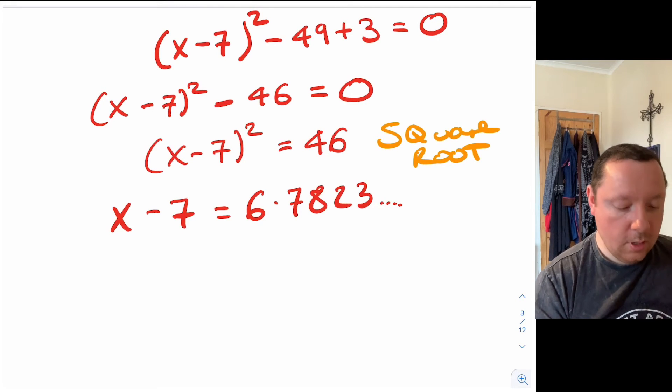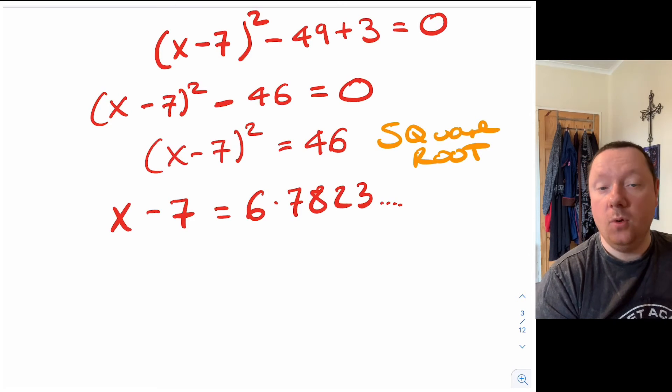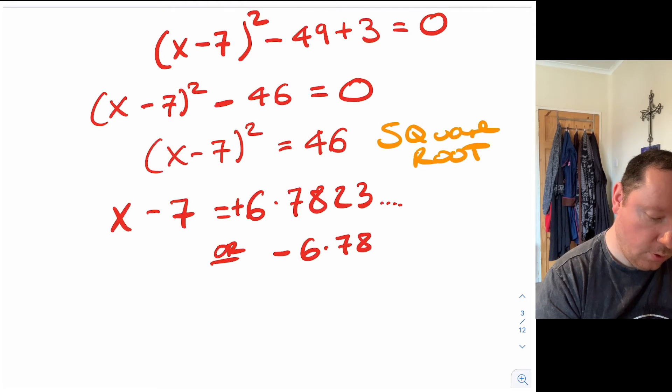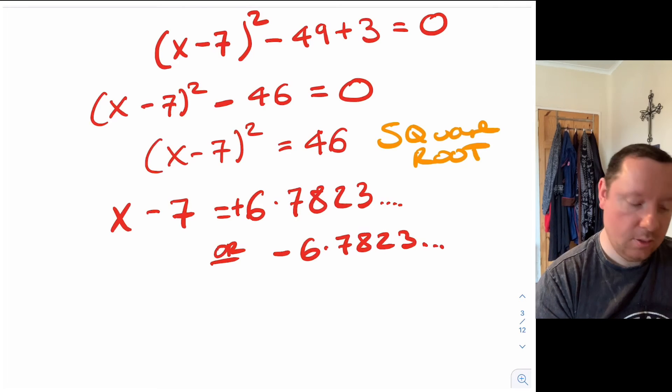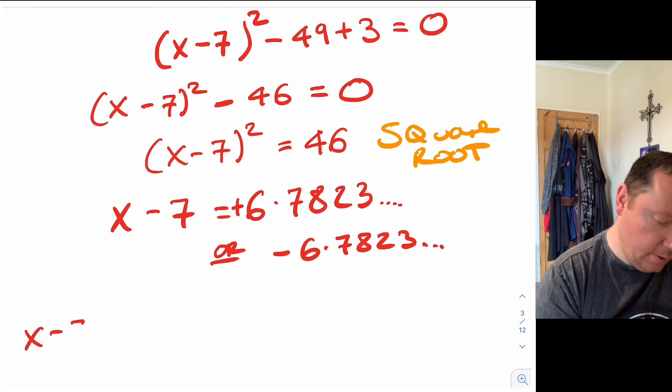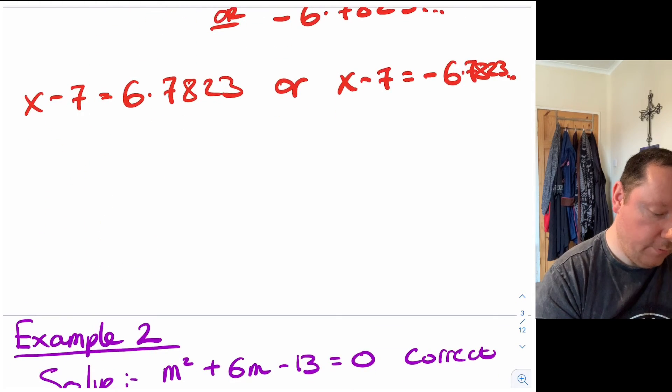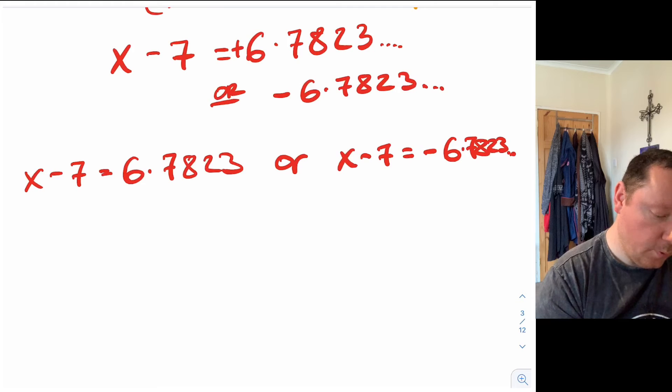Notice for now I'll just write down the full thing 6.78233 because I'll round at the end - if you round now you might double round which is never a good thing to do - and remember that's plus 6.78233 but also the calculator doesn't tell you this minus 6.78233. Always a positive and a negative answer. x minus 7 equals 6.78233 or x minus 7 equals minus 6.78233.